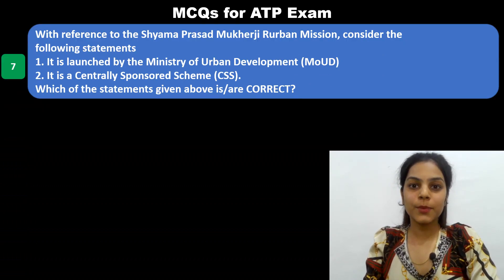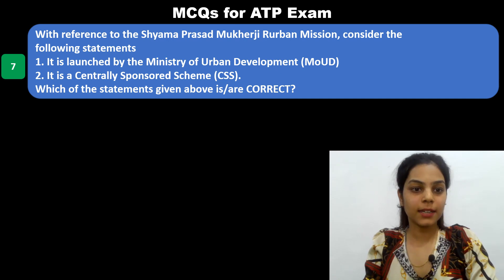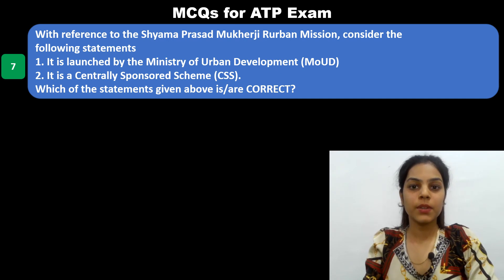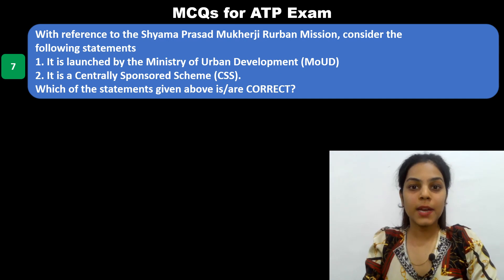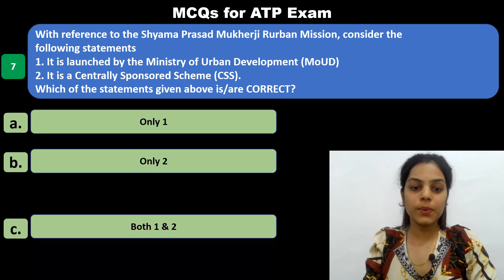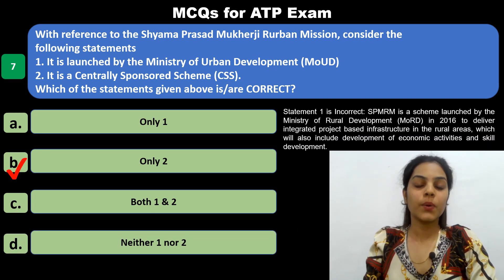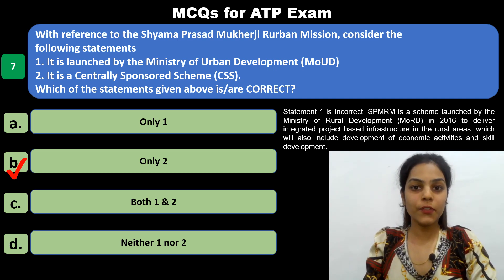With reference to Shama Prasad Mukherjee Re-Urban Mission, consider two statements: one — it is launched by the Ministry of Urban Development; two — it is a centrally sponsored scheme. As we saw in a previous question, it is actually launched by the Ministry of Rural Development, so statement one is already wrong. The answer is only statement two is correct.